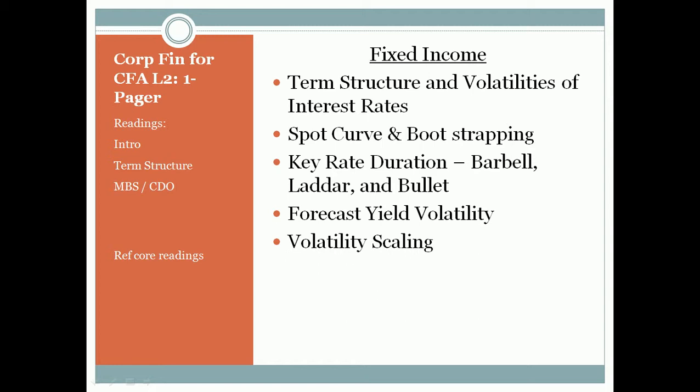Duration measures bond price sensitivity to parallel changes in interest rates. Since parallel changes in the level of interest rates have a significant influence on treasury returns, duration is useful for quantifying interest rate risk. Key rate duration is used to quantify bond price sensitivity to changes in the shape of the yield curve, since non-parallel shifts also impact treasury returns. Key rate duration supplements the information provided by duration when measuring interest rate risk exposures.